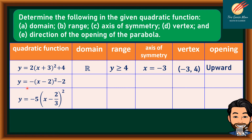On the other hand, if we have y = −(x − 2)² − 2, the domain is the set of real numbers, and the range is y ≤ −2. This is the maximum value because it opens downward, since a is negative.